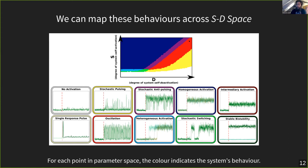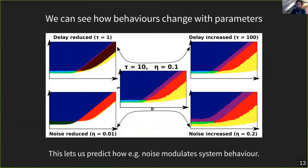We can see, for example, a red region corresponding to oscillation behavior, which requires a certain degree of self-deactivation — if self-deactivation is too low, we can no longer get oscillation. If we increase self-activation enough, we move into a dark blue region — homogeneous activation — meaning the sigma factor is activated immediately when stress arrives. We have six parameters, effectively five that matter. If we reduce the delay parameter tau, the red oscillating region diminishes and disappears. If we reduce eta — the noise — the yellow stochastic pulsing region is diminished; if we increase eta, the stochastic pulsing region enlarges.